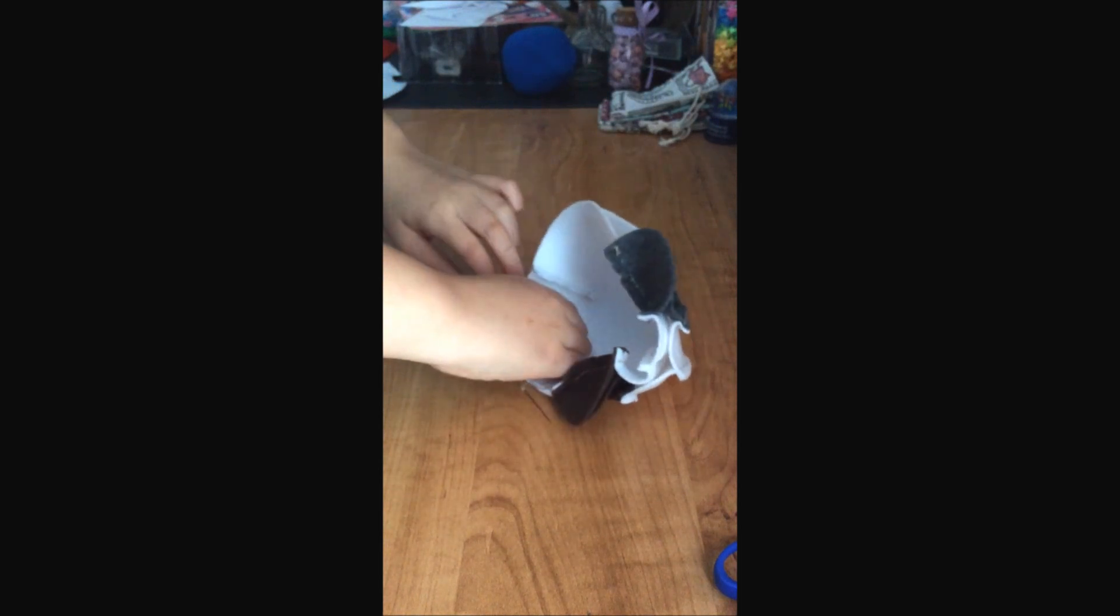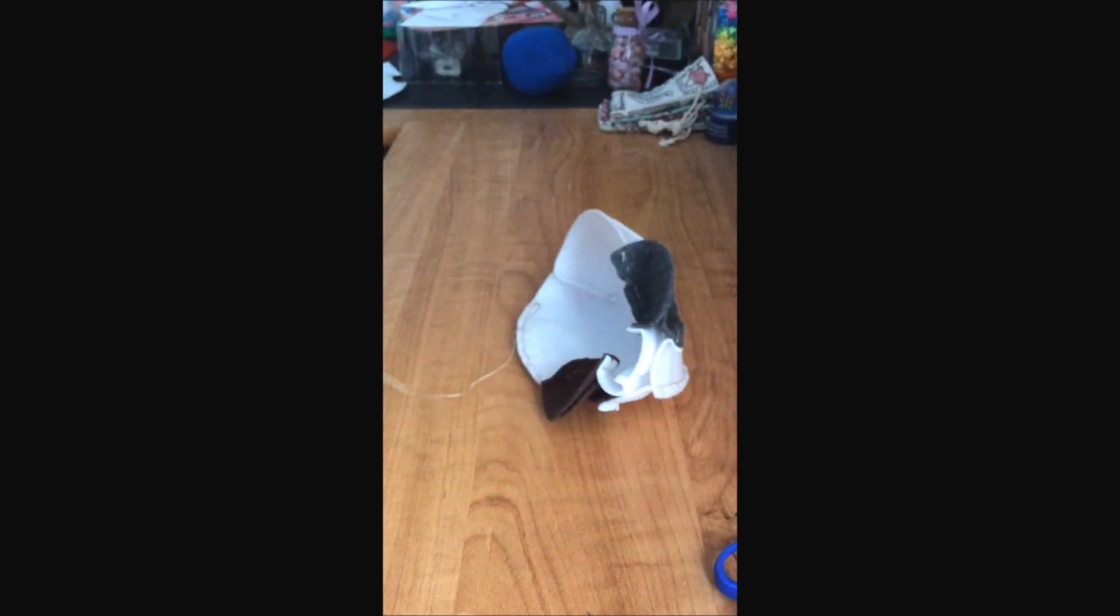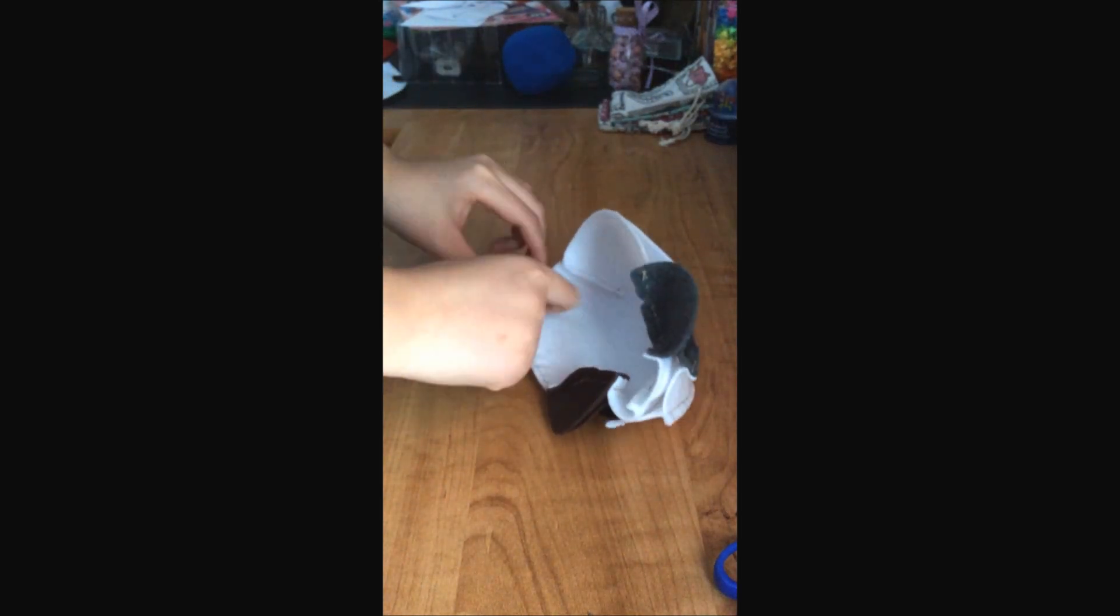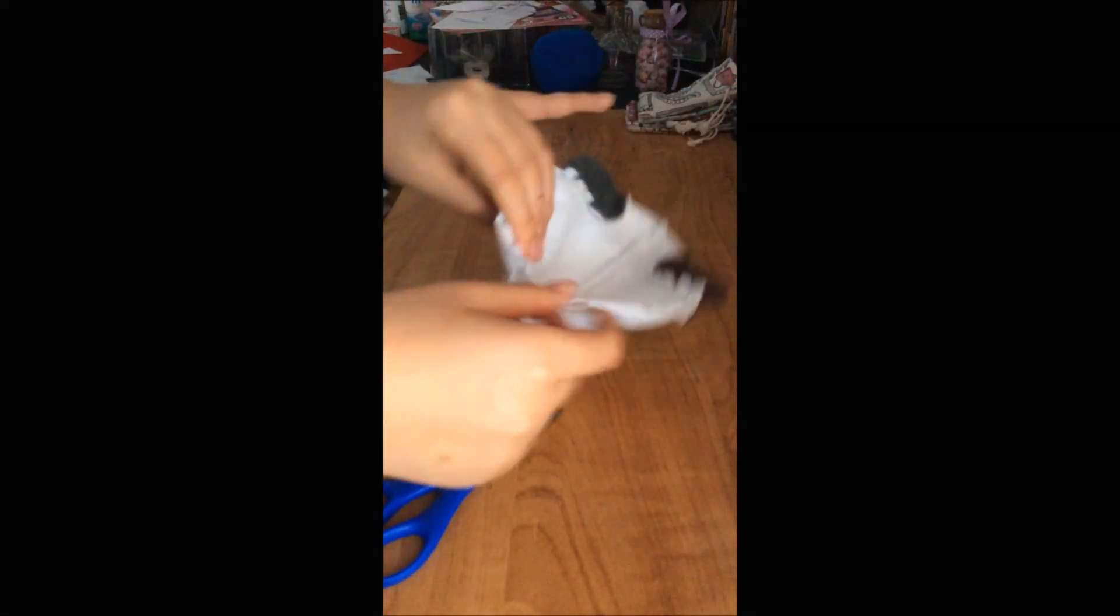Start sewing the sides together, but don't forget to leave a hole at the bottom so you can stuff it and flip it later. I left a 6 cm hole so I can flip it. You can make it however large or small you would like it to be.